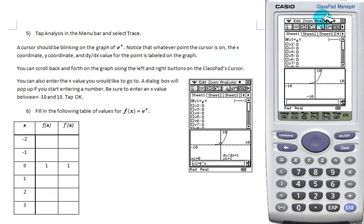Now, while we trace on our graph, it will show us our x values, y values, and the derivative at the point we're at. To trace values, go to analysis, select trace, and we'll get a cursor on the graph of e to the x.